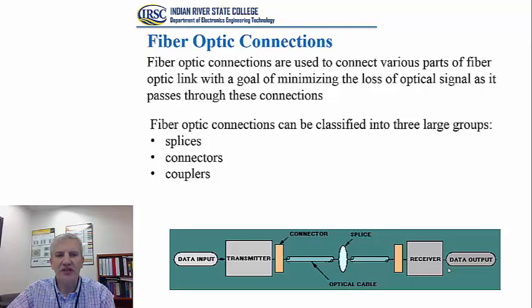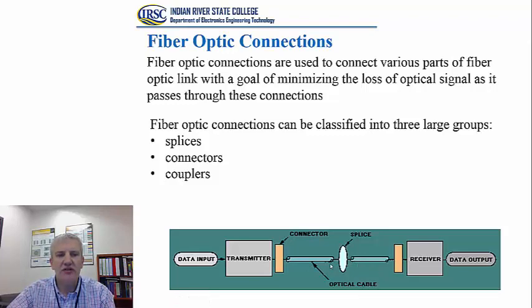The first is fiber optic splices, where a bare fiber is connected directly onto another piece of bare fiber. The second category is fiber optic connectors, which can connect an optical fiber to a transmitter or receiver, or connect two optical fibers by mating two connectors. The third category is couplers, which will be discussed in the future. The main topic of today's lecture is fiber optic connectors.